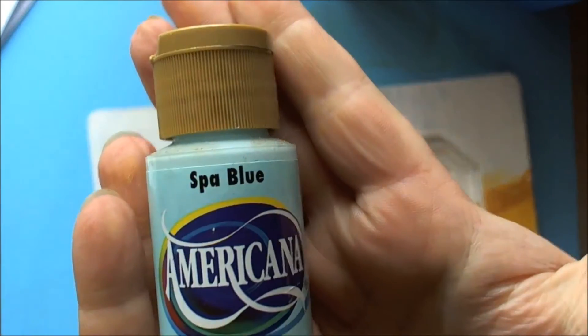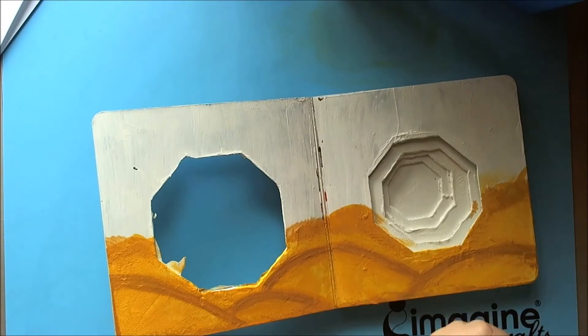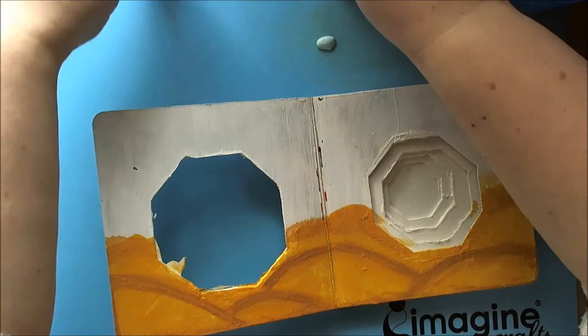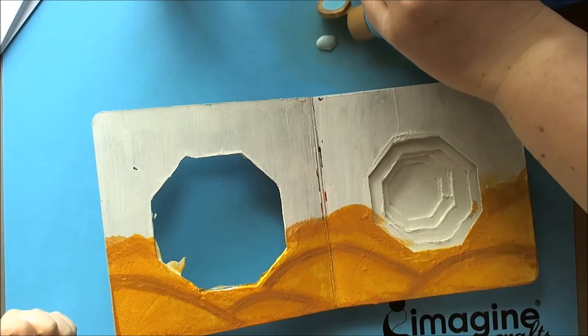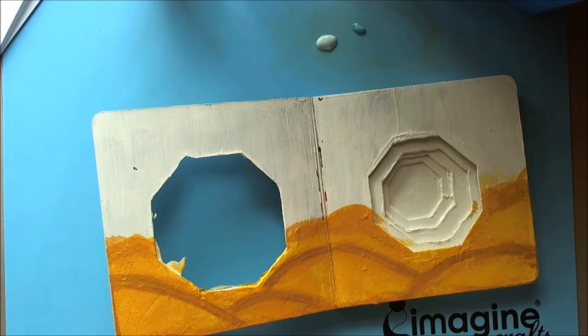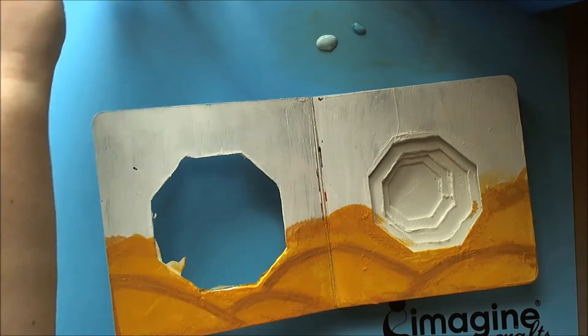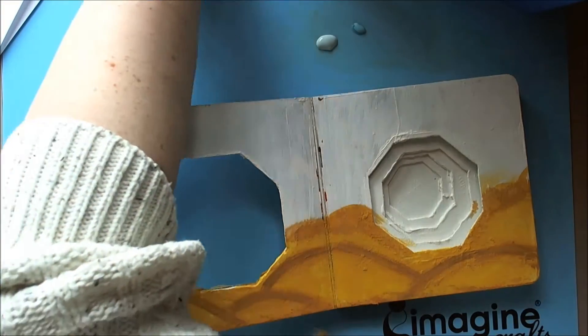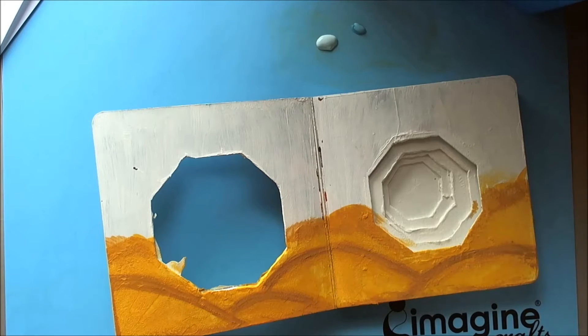Next I'm going to use the Spa Blue and the Indian Turquoise, again in the DecoArt colors. I really like that Indian Turquoise, it's beautiful and dark. I'm going to do the sky the way that I've already designed it. I don't need to put the sun in the sky because it's already implied that it's a bright day.